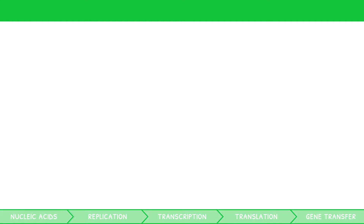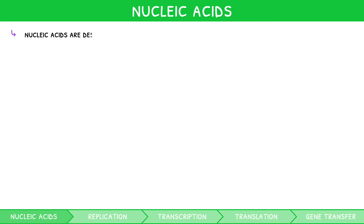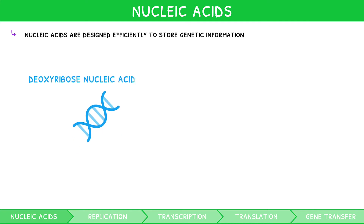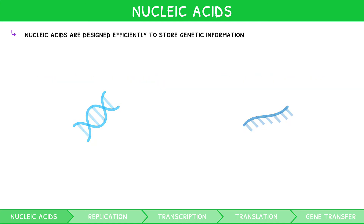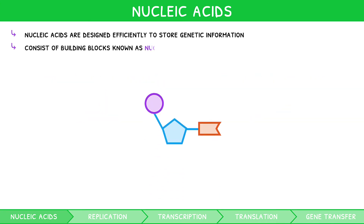As discussed in our IB Biology Topic 1 video series, the nucleus contains genetic information in the form of nucleic acids. These nucleic acids, in particular DNA, are designed efficiently to store genetic information which codes for the production of proteins. Nucleic acids can either be deoxyribose nucleic acid or ribose nucleic acid. These nucleic acids are the building blocks of life, and they themselves consist of building blocks known as nucleotides.